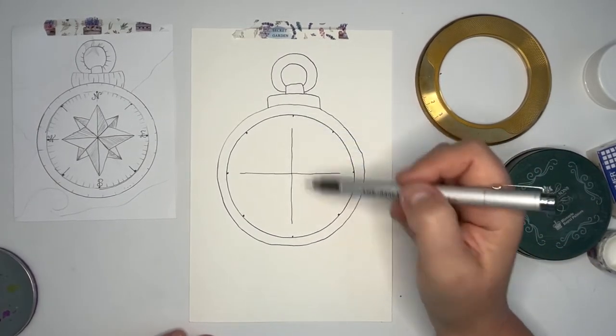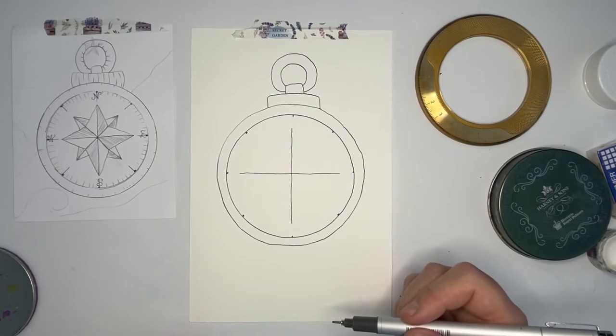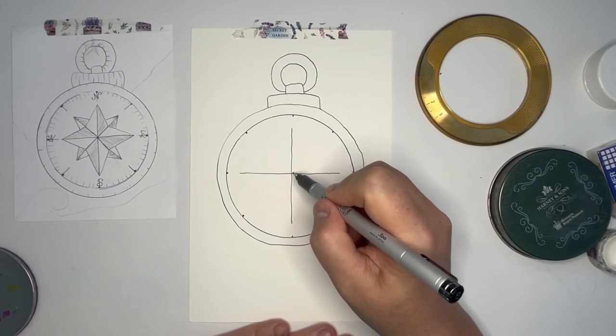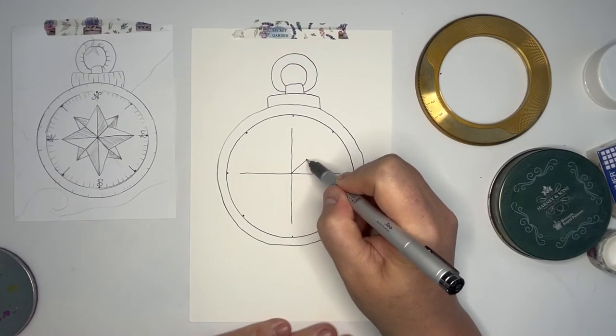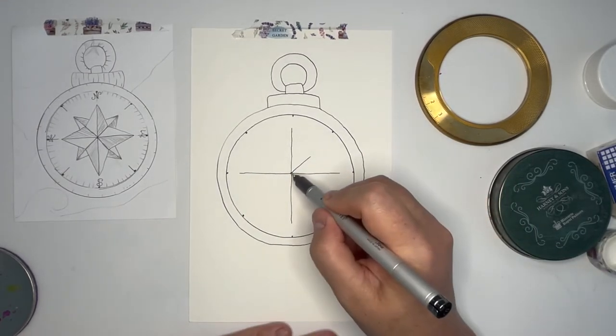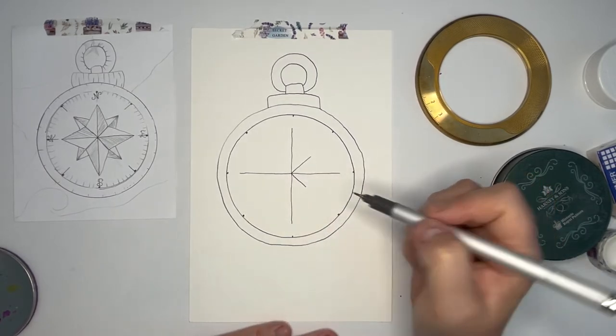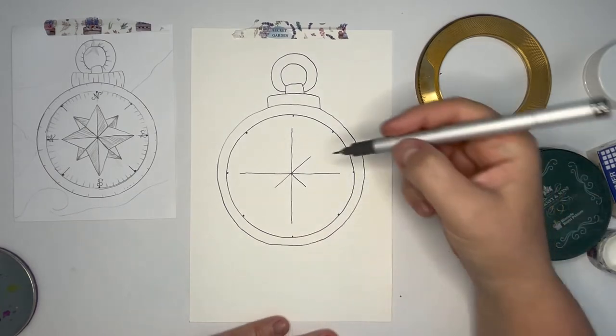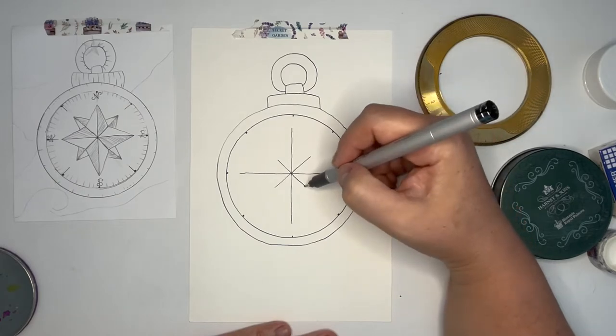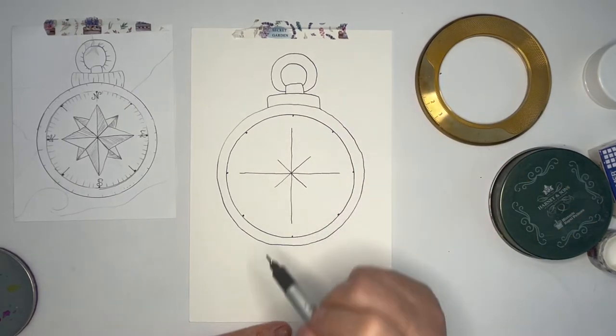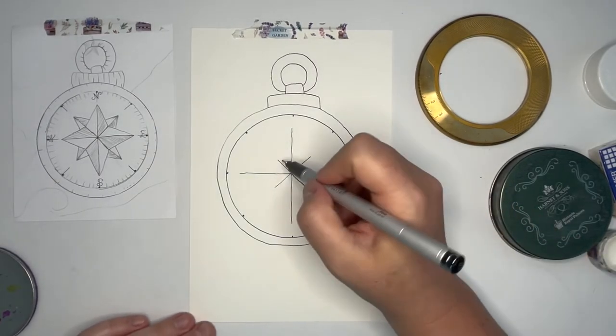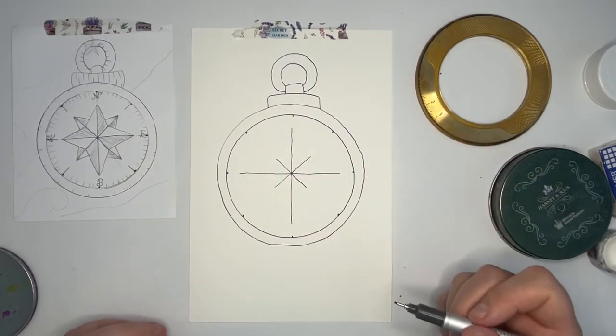So we have a plus and it doesn't touch, we've got a little space between all those. Then we're going to come out, and from the center we're going to go toward that little halfway point, but we're not going to go all the way, not even really halfway, we're going to just make a little line. We want them to be roughly the same length.